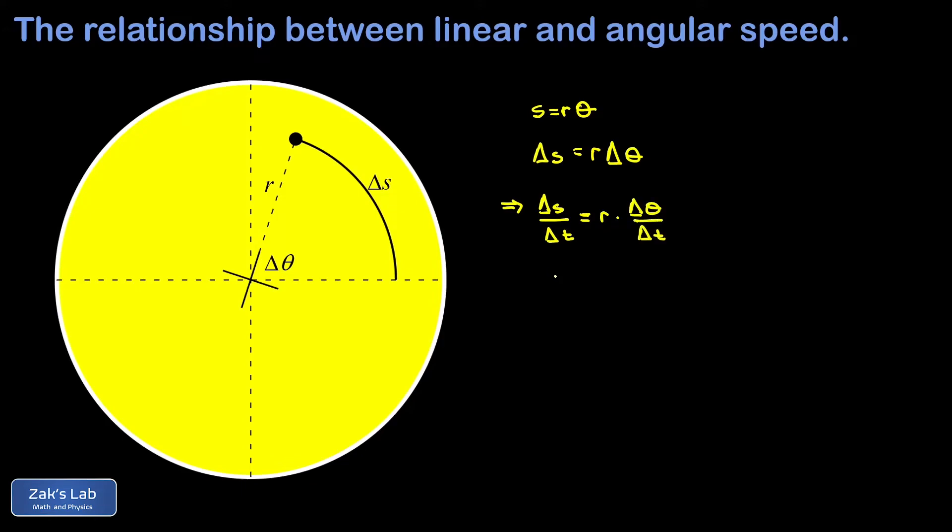Now delta s over delta t is actually what we're after here. That's the speed of our spot as it's rotating in uniform circular motion, and we'll call that v. It's just the distance it covered divided by how long it took.